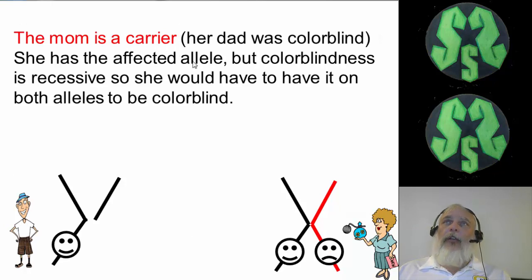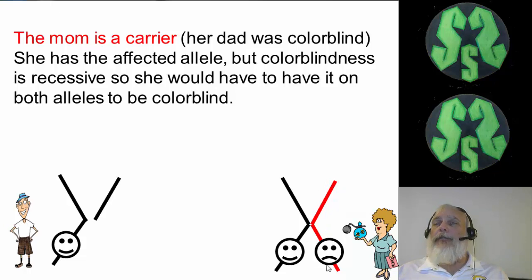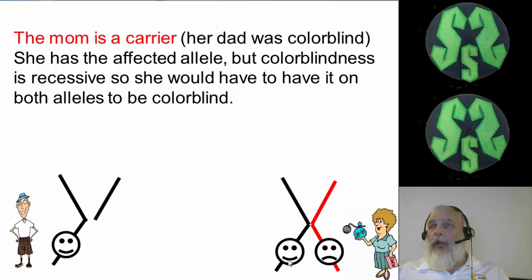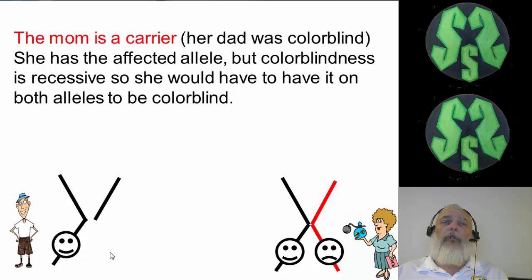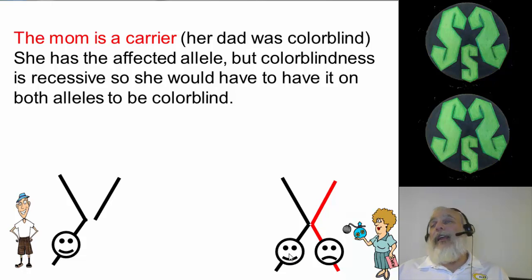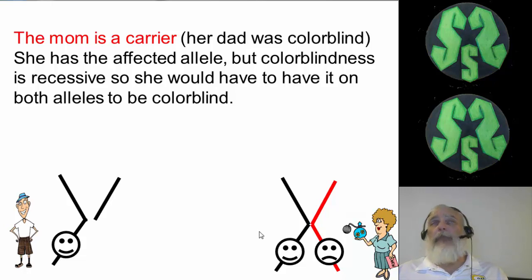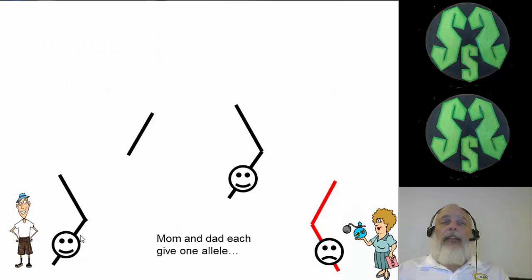Her other X chromosome has normal sight. Dad has an X chromosome with normal sight and a Y chromosome. Notice that the portion of the X chromosome that carries information for color sight or color blindness is a section dad doesn't even have on his Y chromosome. So dad just has one allele for normal color sight. Mom has one for normal color and one for color blindness — and fortunately, color blindness is a recessive trait, so she can see normal color.